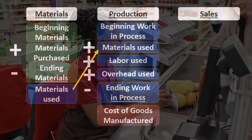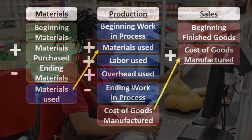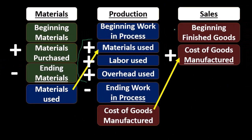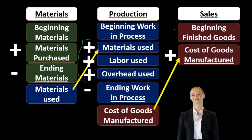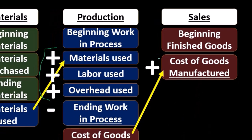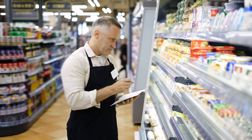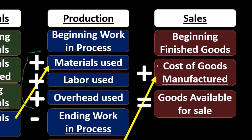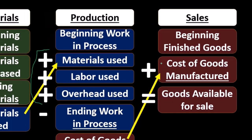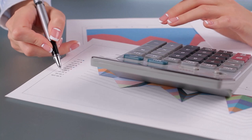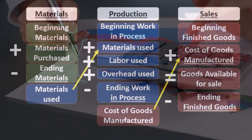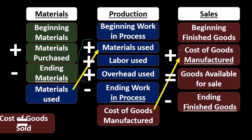Cost of goods manufactured is used in the cost of goods sold calculation. We start with beginning finished goods inventory, then add cost of goods manufactured — where a merchandiser would add purchases instead. This gives us goods available for sale. We then subtract ending finished goods inventory, which we can get from a physical count, to finally arrive at cost of goods sold.